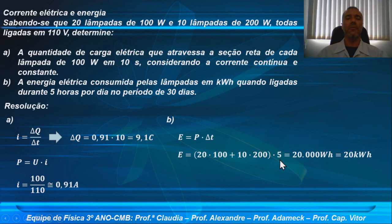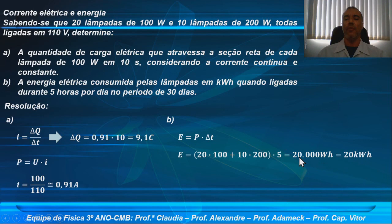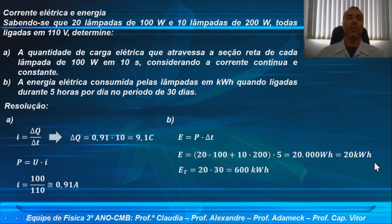Por que hora? Porque ele me deu um tempo em hora. Eu já vou colocar em kilowatt-hora. Lembre-se que o prefixo quilo representa 10 elevado à terceira, ou seja, mil. Como eu tenho 20 mil, esse mil me dá 20 kilowatt-hora. Isso é consumido em um único dia. Então, ao longo do mês de 30 dias, a energia total consumida é: 20 vezes 30 dias, resultando em 600 kilowatt-hora. Está aí a energia total.